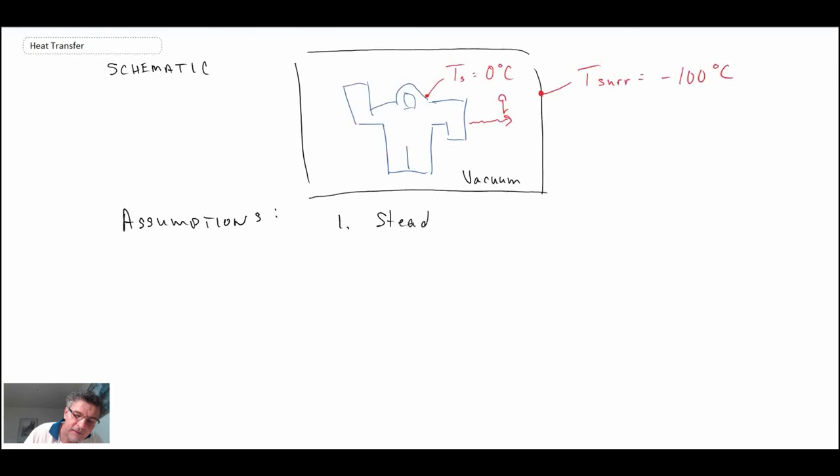Steady state. So the spacecraft is not going around the Earth and going from a shaded region to a region where we have solar radiation. It's operating in steady state.